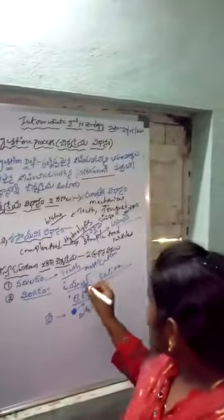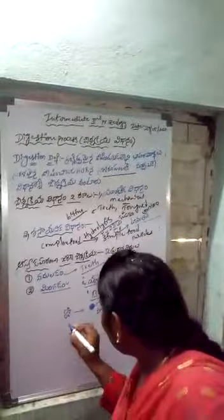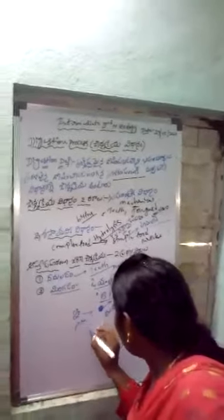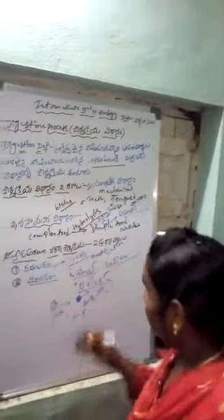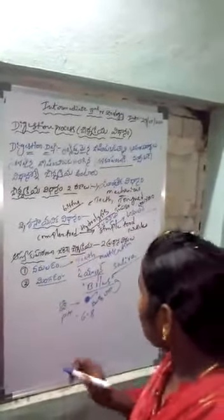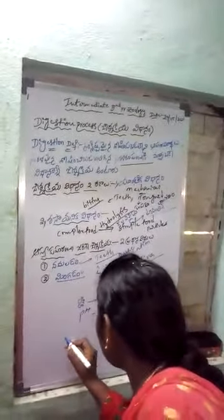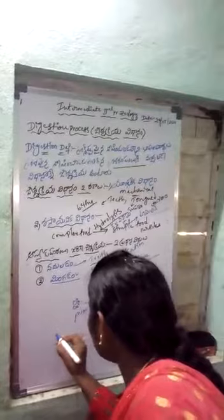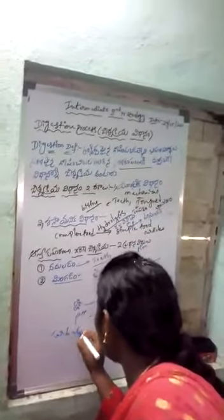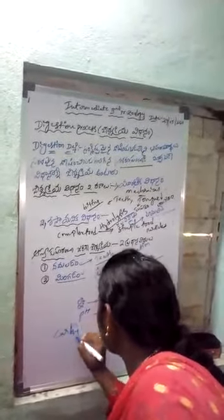This enzyme has a pH of 6.8, which is slightly acidic in nature. So we are preparing for this food, and we are going to use the carbohydrates.